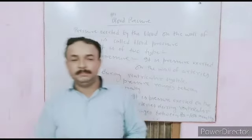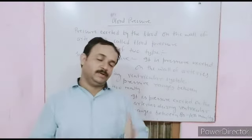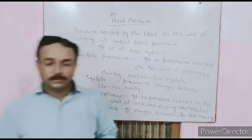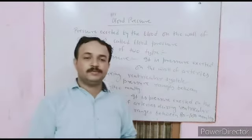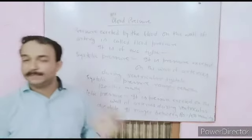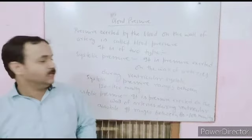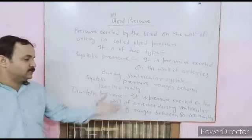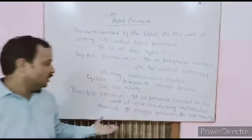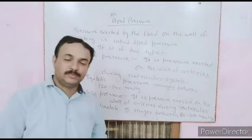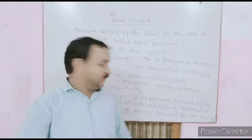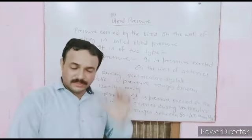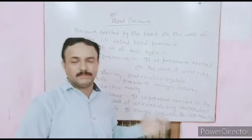The pressure exerted by blood on the wall of arteries is called blood pressure. There is systolic pressure and diastolic pressure. Systolic pressure is the pressure exerted on the wall of arteries during ventricular systole, and diastolic pressure is the pressure during ventricular diastole. This gives us the normal blood pressure of human beings.